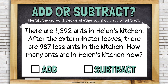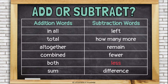There are 1,392 ants in Helen's kitchen. After the exterminator leaves, there are 987 less ants in the kitchen. How many ants are in Helen's kitchen now? Here we have the word 'less,' which usually means to subtract. And if we think about what's happening here, we have a bunch of ants and then we get rid of a bunch of ants. We're taking ants out of Helen's kitchen, so that suggests that we need to subtract.